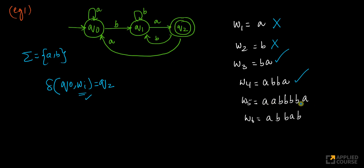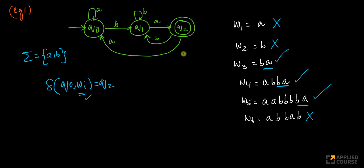Let's look at a more complex example: 'a a b b b b a' — yes, this is also accepted. What about 'a b b a b'? This is not accepted. One pattern you may have observed: if you have 'ba' at the end, those strings are accepted by this automaton.